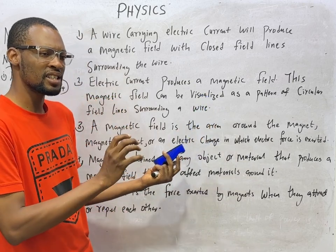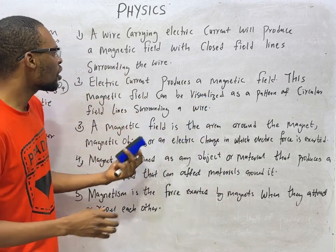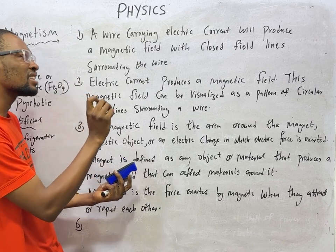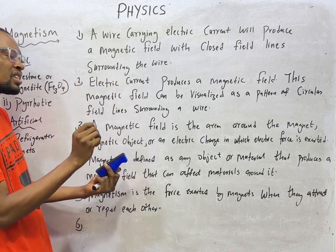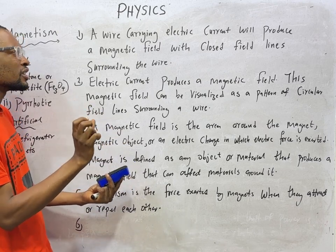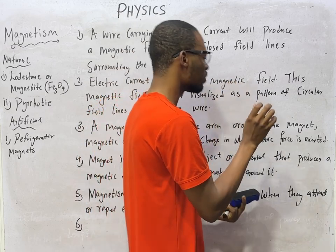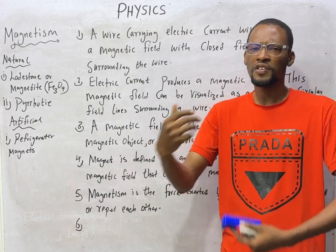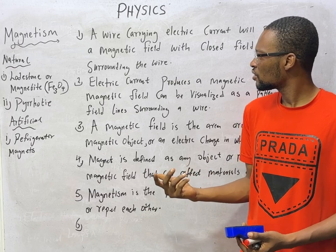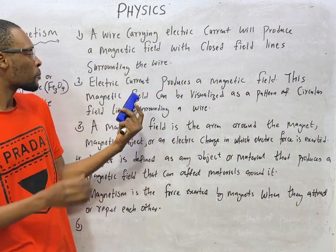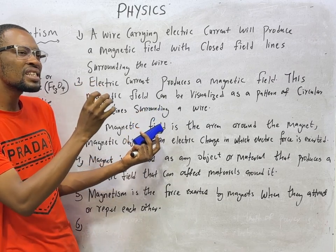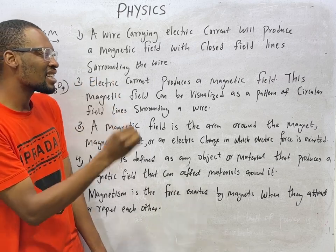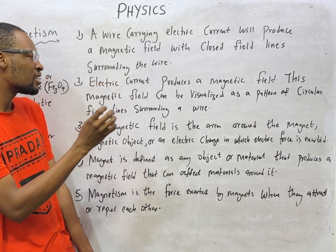Let's look at some facts about magnets and magnetic fields. Number 1: a wire carrying electric current will produce a magnetic field with closed field lines surrounding the wire. Take note of this key point — a wire carrying electric current will produce a magnetic field, which means electric currents or charges are responsible for the production of magnetic fields. Number 2: electric current produces a magnetic field.